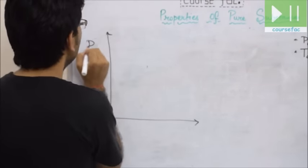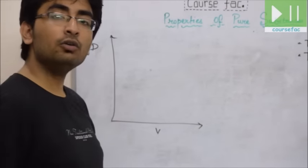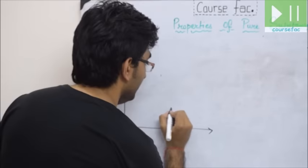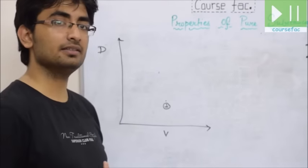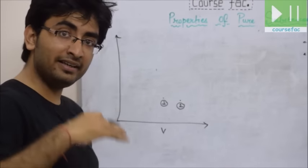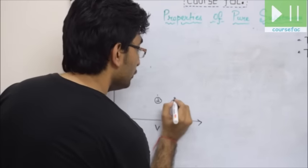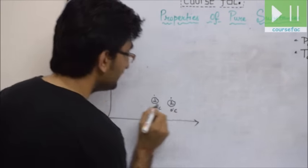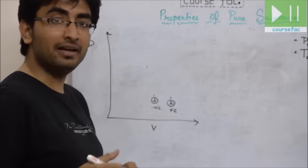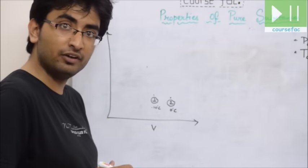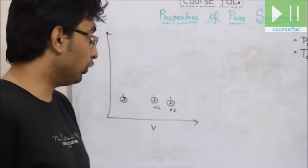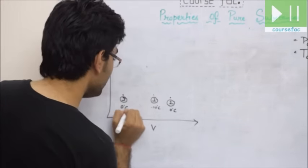Now we study the behavior of water through the PV diagram, where P is on the y-axis and V on the x-axis. Ice at minus 10°C is enclosed in a piston at constant pressure of 1 atm — this is point 1. Heating ice to 0°C increases its volume — this is point 2. At point 2, ice melts at constant temperature and pressure into water at 0°C. Due to water's peculiarity, volume decreases when ice melts — this is point 3.